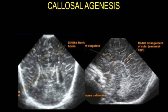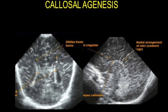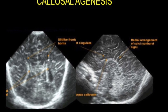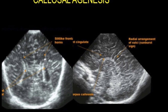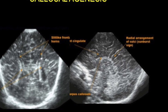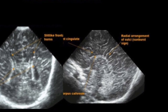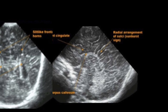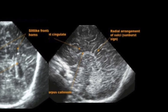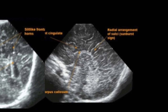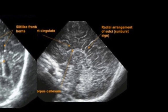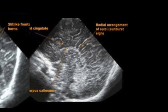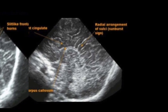In callosal agenesis, you get parallel, widely spaced lateral ventricles where the medial ends look quite parallel, because the commissural fibers do not cross over and remain on the same side. On the coronal image you can see a radial arrangement of the sulci, which is the classic sunburst sign.